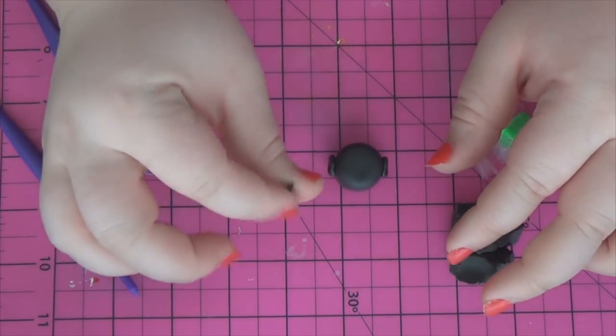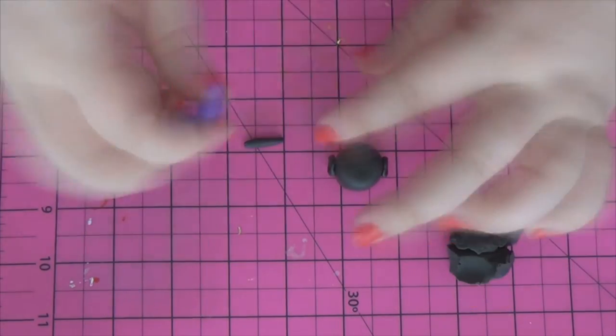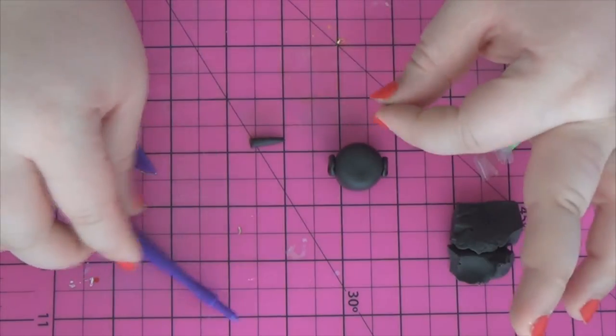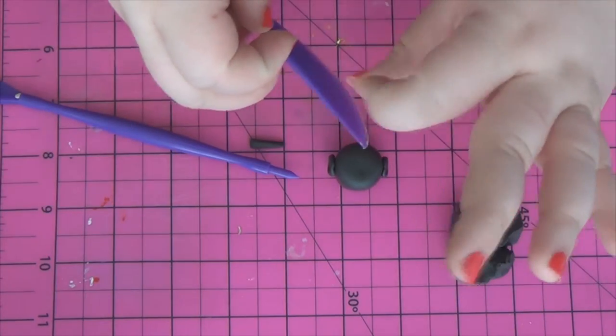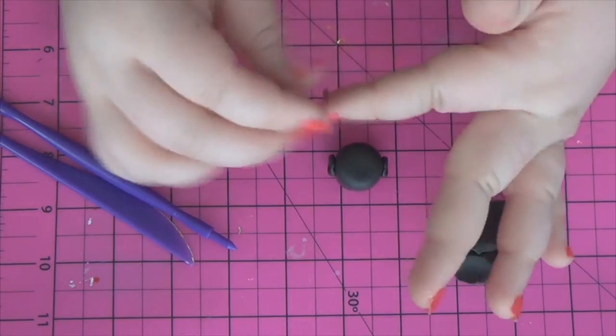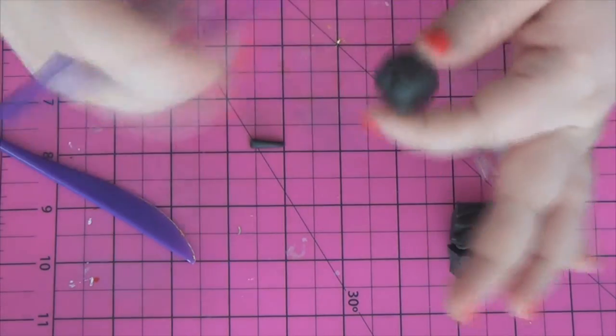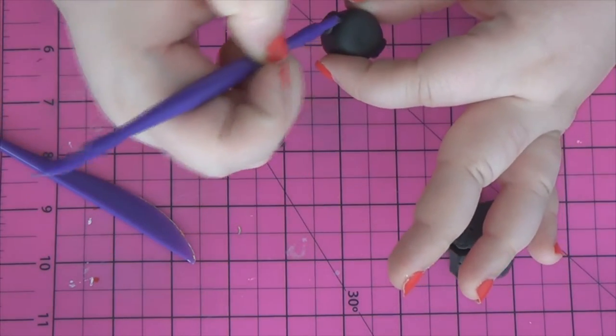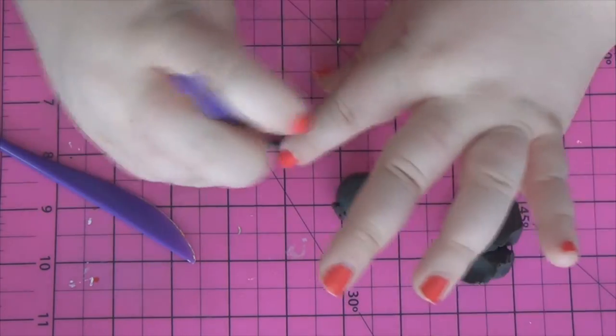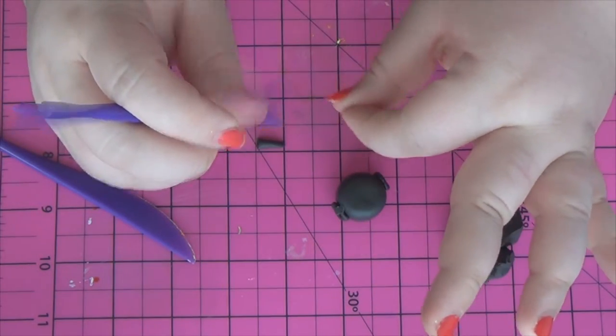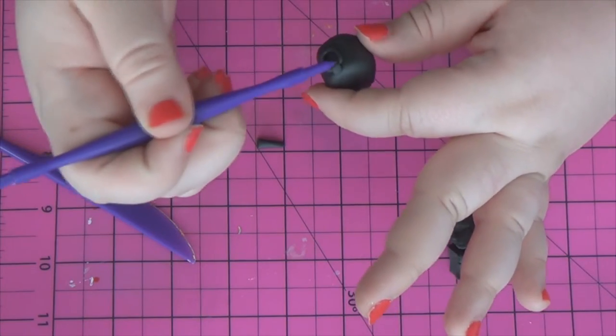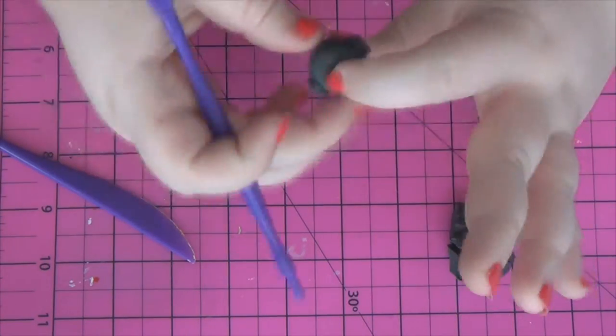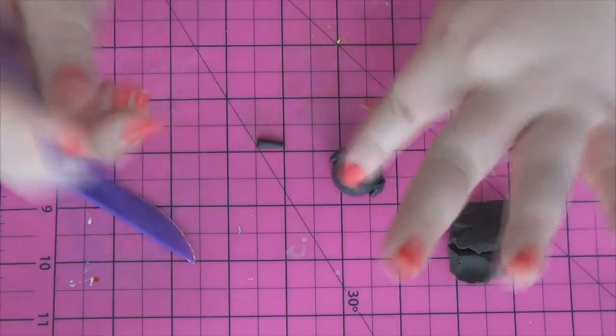So now that I had those handles on, I had to take small pieces of black to pretty much attach those handles. And I just basically rolled them into little short strings and then flattened it a little bit. And then I used my tool to kind of blend it in so that it looked like it was attached to the cauldron. And then I just repeated the process on the other side. So now my little cauldron has little handles that are attached to the side of it.